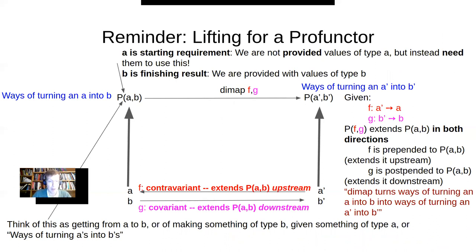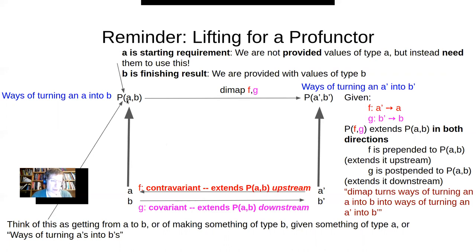There are real intuitions to build here that make use of reasoning we've used our whole lives. Think of the profunctor not as an opaque black box but as something that turns an A into a B — something that makes a B given an A. It summarizes ways of turning an A into a B. Later we'll think of it as possible avenues to get from A to B, or in terms of cost, or feasibility.